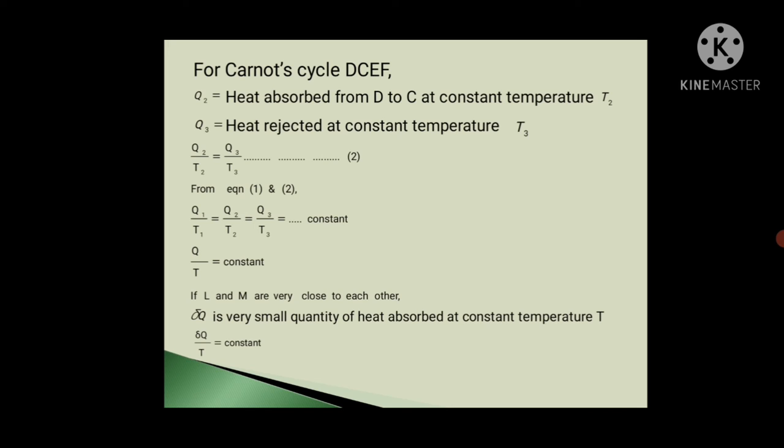So from equation first and second, we can write Q1 upon T1 equals Q2 upon T2 equals Q3 upon T3 equals constant. So Q upon T is constant.